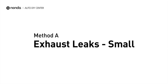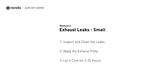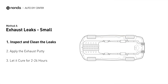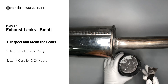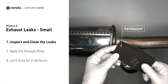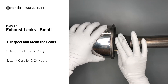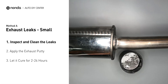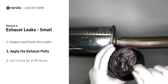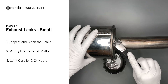Method A: Exhaust Leaks. The exhaust system begins at the engine combustion chambers and runs along the undercarriage of the vehicle, eventually ending with the visible tailpipe. If you have a small leak, get some exhaust putty to seal it up. First, get sandpaper and a wet wipe to clean the leaking area for better application. Stir the paste well to activate it.